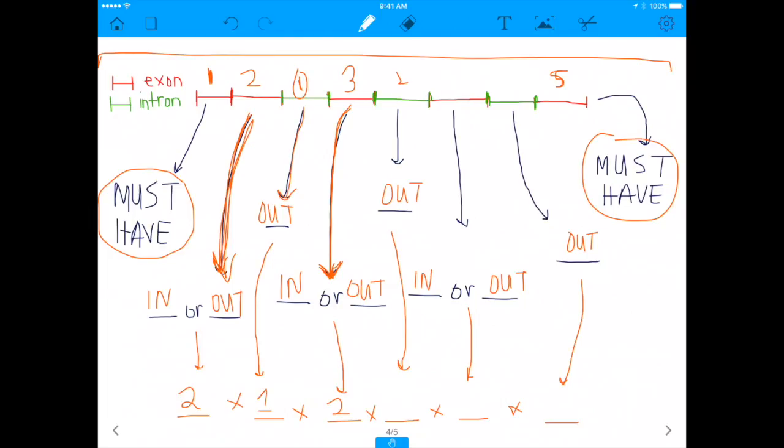Similarly, this next exon, which is exon 3, this exon can be in or out. There are two possibilities for it. There are two ways that can happen. It can either be part of the final transcript or may not be. Similarly for exon 2, we said it could either be a part of it or might not be. Similarly for exon 3, that's the same exact thing. Now, this is intron 2. This has to be removed. So there's only one option for it.